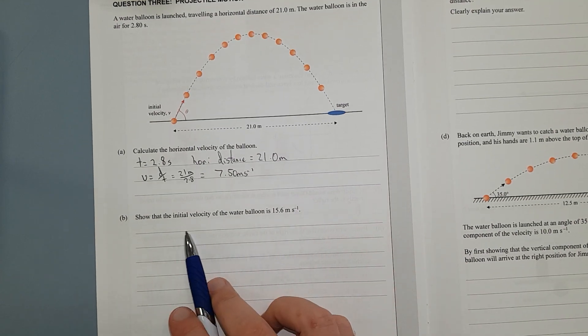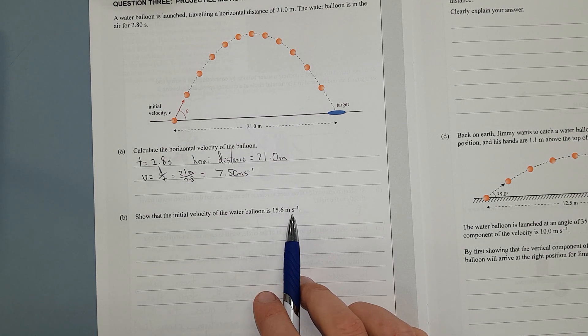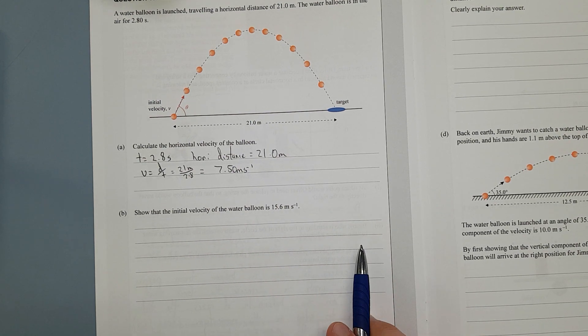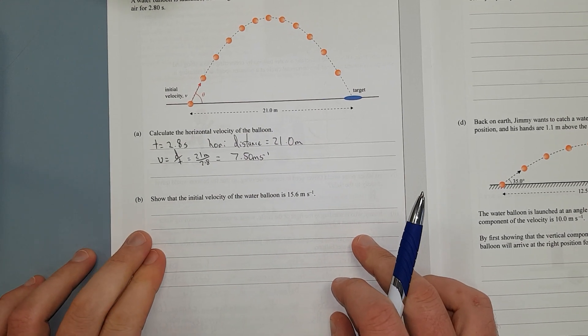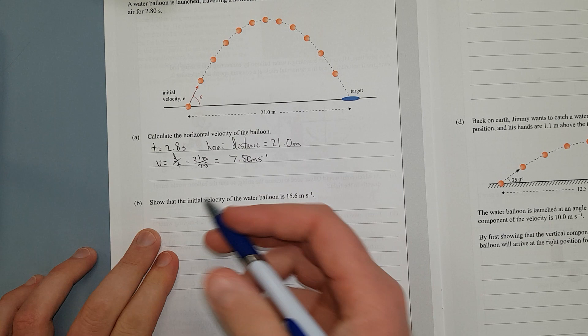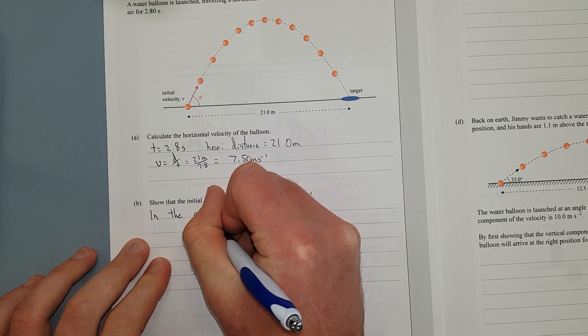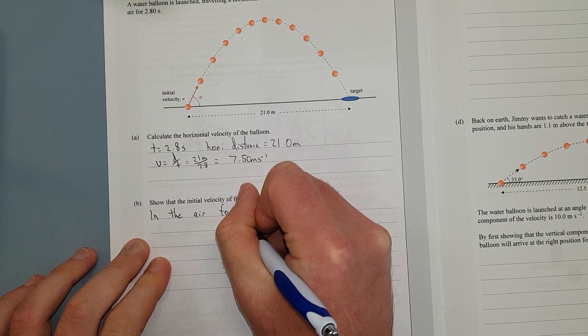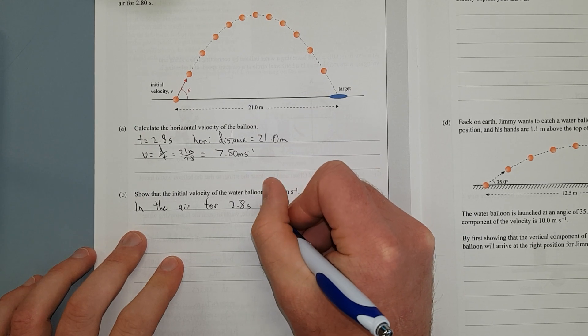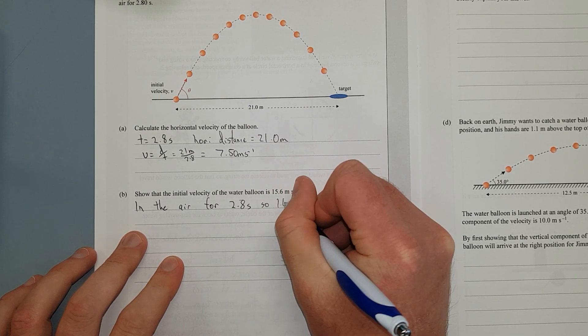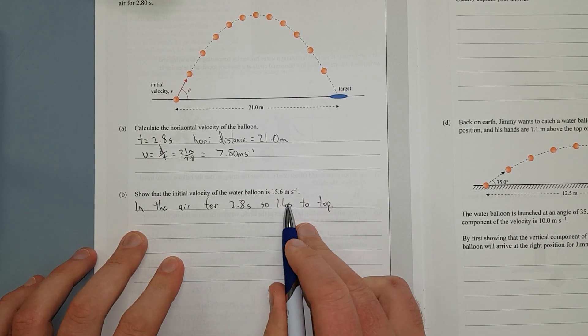Next question. Show that the initial velocity of the water balloon is 15.6 metres per second. So this is a merit question, so you're going to do two steps for this one. The previous one was just achieved, and it's a one step question. So the first thing we need to do is write down, in the air for 2.8 seconds. So 1.4 seconds to the top. There we go. So that's a key idea.